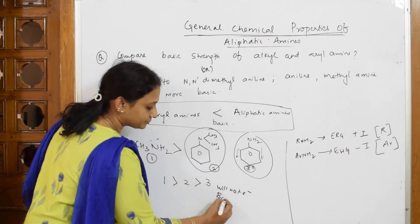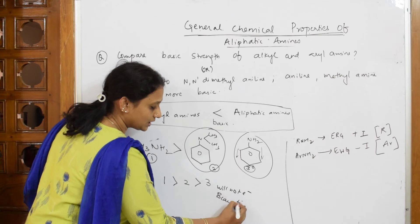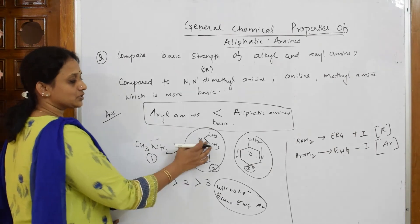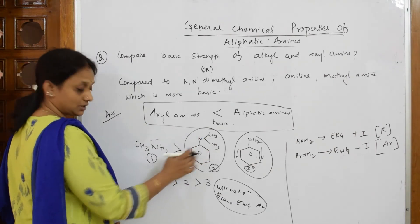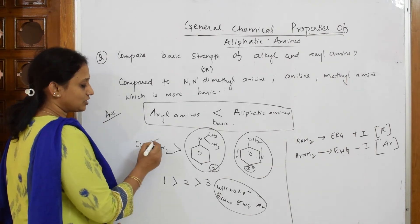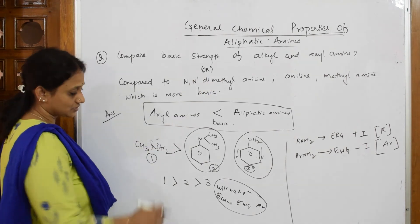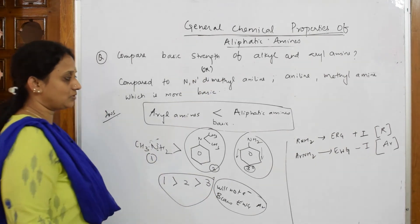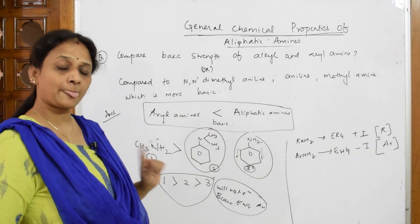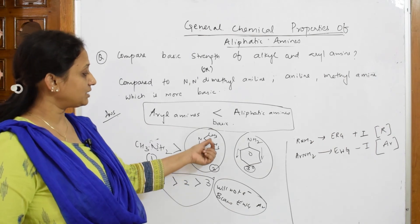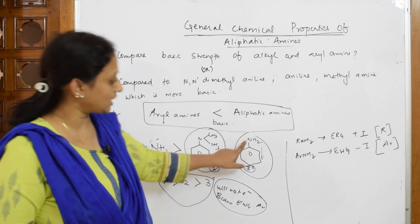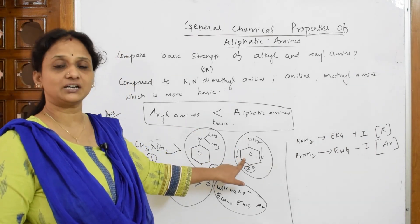In N,N-dimethylaniline, even though nitrogen is attached to the benzene ring, you have two electron-releasing methyl groups, so compared to aniline it releases more electrons and electron density on nitrogen increases. To summarize: aryl amines are less basic than aliphatic amines. If a methyl group is attached to the nitrogen on the benzene ring compound, that compound is more basic compared to the directly attached nitrogen-benzene ring compound.